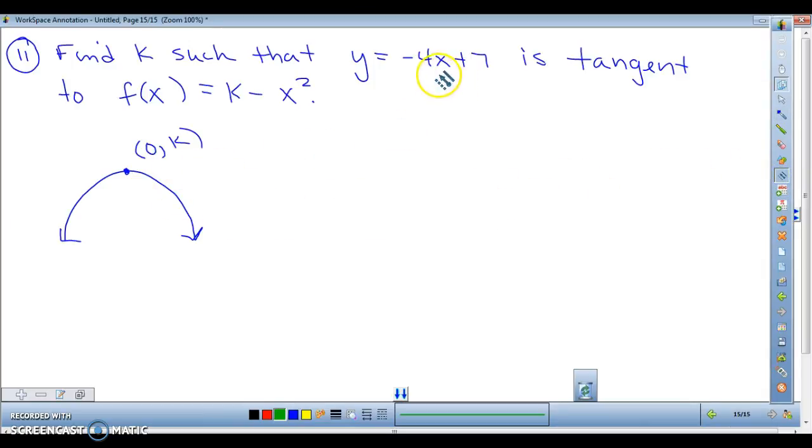And then we have a line that is tangent. Now, this line has a negative slope. So that means don't draw your line here because if you do, that would be a rising line that would have a positive slope. So just sketch it somewhere over here, your line that would be tangent. And again, it's just a sketch just to give you an idea of exactly what it is you're dealing with. So here, this would be y equals negative 4x plus 7. And, of course, this is f of x. And we've got to figure out what k is.